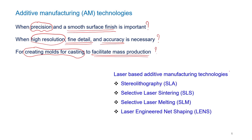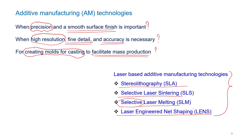As mentioned, lasers are helpful. The prominent laser-based methods are: stereolithography (SLA), selective laser sintering, selective laser melting, and laser engineered net shaping (LENS). In this way, lasers can be used to solve some of the limitations of FDM techniques. We will see these techniques one by one.